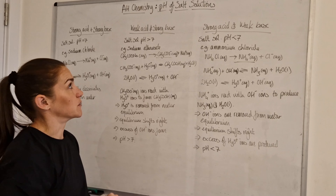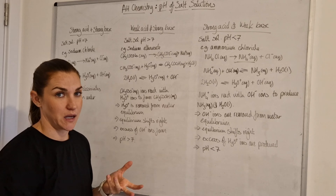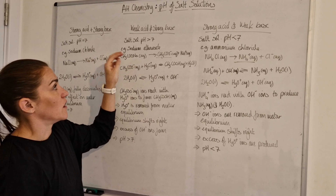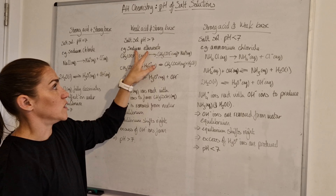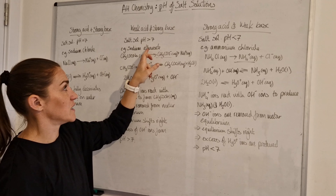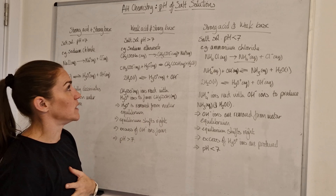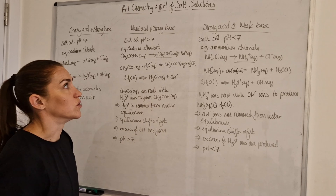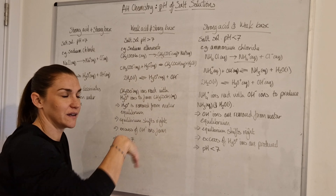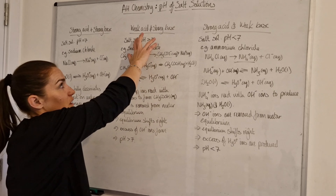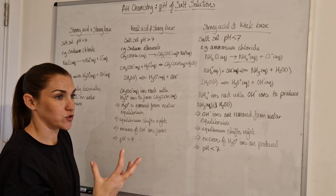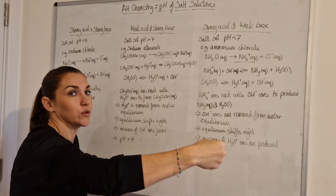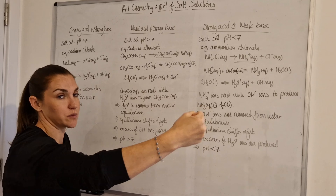Now for the more complicated cases where something weak — a weak acid or weak base — is involved. If you have a weak acid and a strong base, like sodium ethanoate (made from sodium hydroxide and ethanoic acid), the salt solution will have a pH above seven. Think of it as a tug of war: if both are strong, the pH is in the middle at seven. If the acid is weaker, the base wins and pulls the pH above seven.